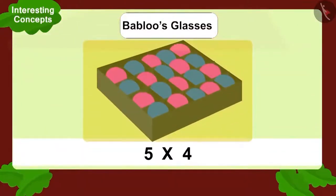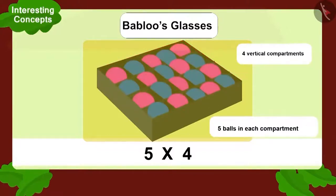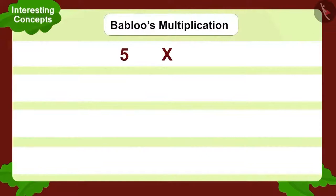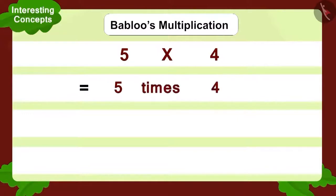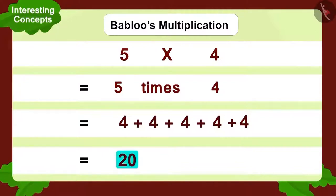Now Bablu wore his glasses and looked at the box. He saw four big compartments and five balls in each compartment: five multiplied by four. Adding four five times gives the same answer — twenty balls.